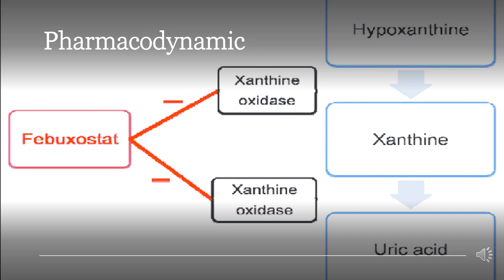Pharmacodynamics. Febuxostat is a novel, selective xanthine oxidase/dehydrogenase inhibitor that works by decreasing serum uric acid in a dose-dependent manner. In healthy subjects, Febuxostat decreased the mean serum uric acid and serum xanthine concentrations, as well as the total urinary uric acid excretion. At daily doses of 40 to 80 mg, it reduced the 24-hour mean serum uric acid concentrations by 40 to 55%. Closely related to the drug-induced reduction of serum uric acid levels and mobilization of uric crystals in tissue deposits, Febuxostat is associated with gout flares. Unlike allopurinol and oxopurinol, Febuxostat has no inhibitory actions against other enzymes involved in purine and pyrimidine synthesis and metabolism, because it does not structurally resemble purines or pyrimidines.